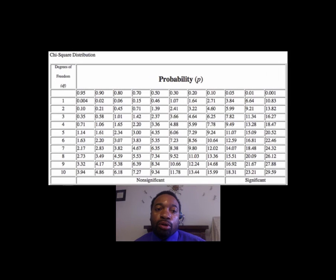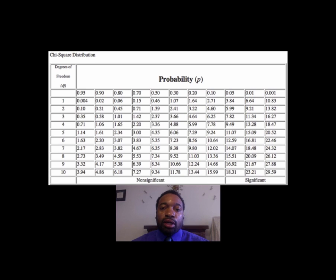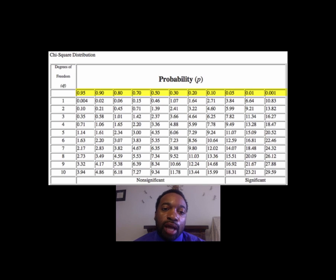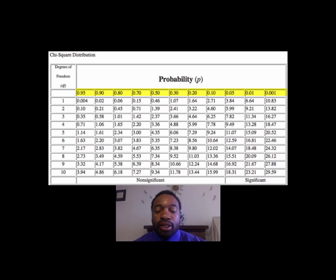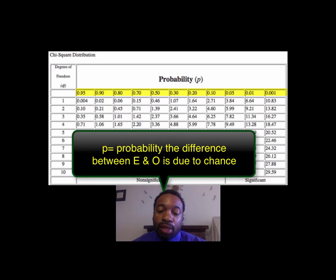We're going to compare our chi-square value to a table called a chi-squared distribution table. That number — essentially the sum of all the percent errors — is compared to this table to figure out whether it represents a significant difference. The top row contains what we call probability values, ranging from 0.95 to 0.001, which can be converted to percentages: 95%, 90%, 80%, and so on. These p-values represent the probability that the difference between the expected and observed numbers can be explained by chance.